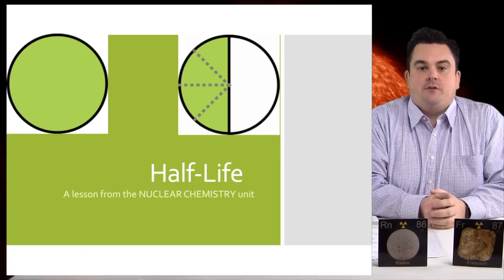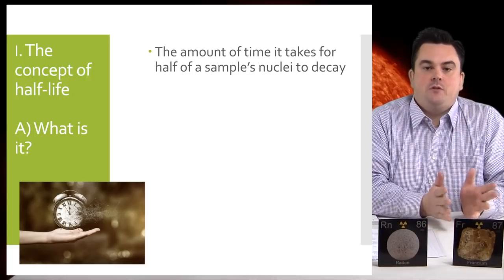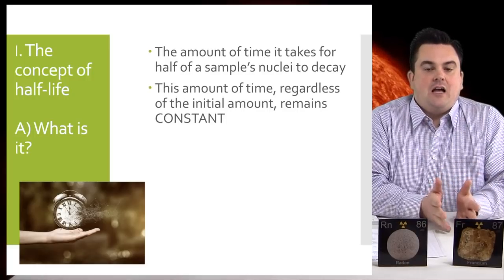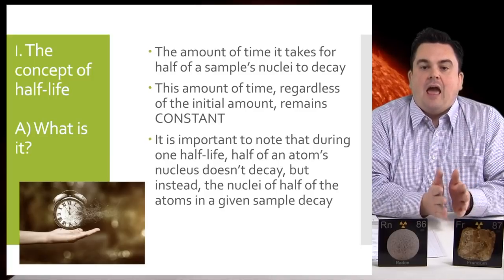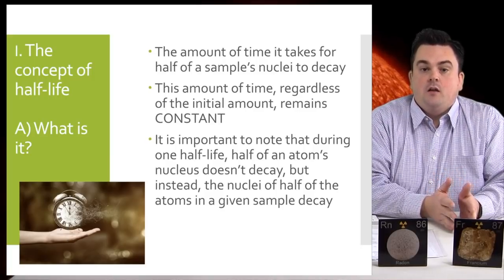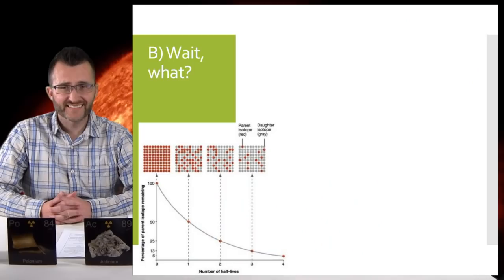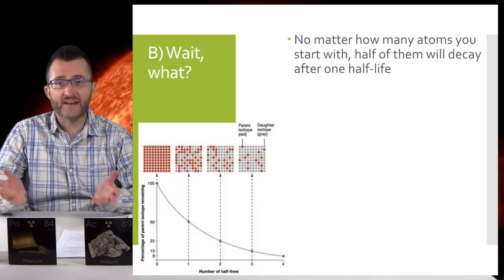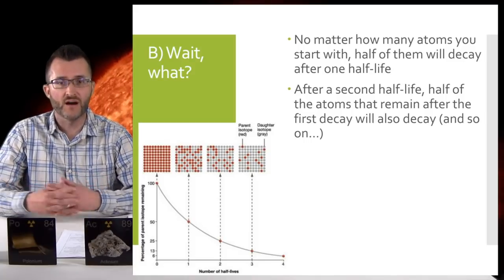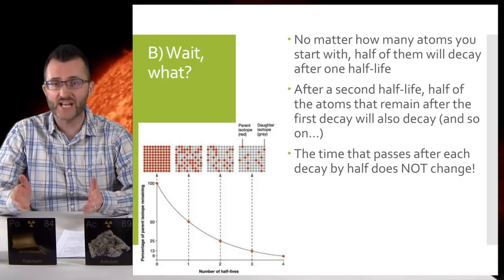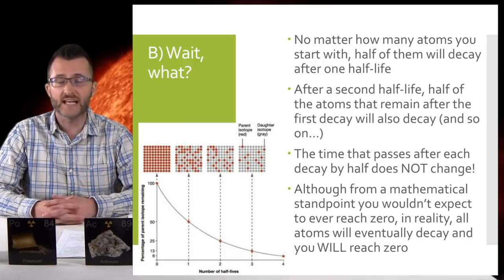Half-life, a lesson from the nuclear chemistry unit. The concept of half-life, what is it? It's the amount of time it takes for half of a sample's nuclei to decay. This amount of time, regardless of the initial amount, remains constant. It is important to note that during one half-life, half of an atom's nucleus doesn't decay. But instead, the nuclei of half the atoms in a given sample decay. No matter how many atoms you start with, half of them will decay after one half-life. After a second half-life, half of the atoms that remain after the first decay will also decay, and so on. The time that passes after each decay by half does not change. Although from a mathematical standpoint you wouldn't expect to ever reach zero, in reality all atoms will eventually decay, and you will reach zero.